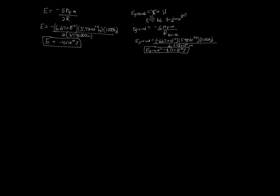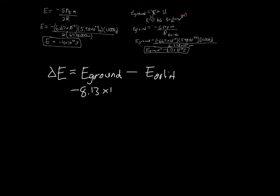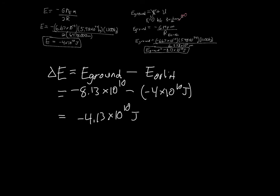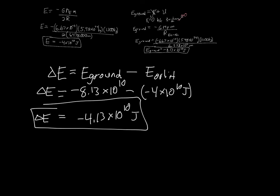The change in energy equals the energy on the ground minus the energy in orbit: negative 8.13 times 10 to the 10 joules minus (negative 4 times 10 to the 10 joules), giving a change in energy equal to negative 4.13 times 10 to the 10 joules. That negative indicates the satellite has lost energy during this fall. The next part will address where that energy actually went.